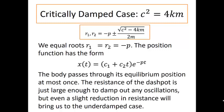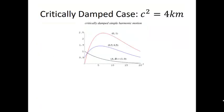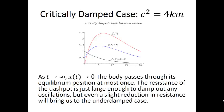In this case, the body passes through its equilibrium position at most once. The resistance of the dashpot is just large enough to damp out any oscillation, but even a slight reduction in resistance will bring us to that under damped case. Here are some graphs of what this motion might look like in the critically damped case. Notice again as T approaches infinity, X of T approaches 0. So the body passes through its equilibrium position at most once. The resistance of the dashpot is just large enough to damp out any of those oscillations, but again even a slight reduction in resistance will bring us to the under damped case.